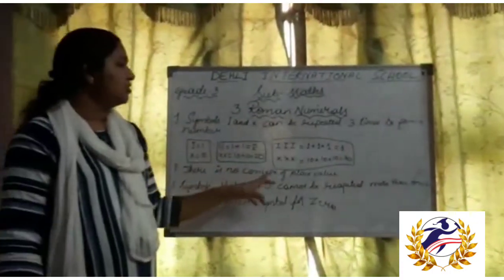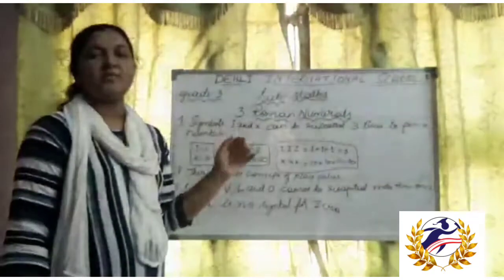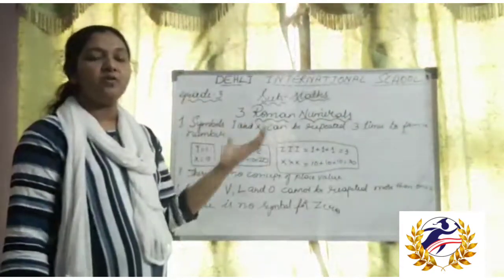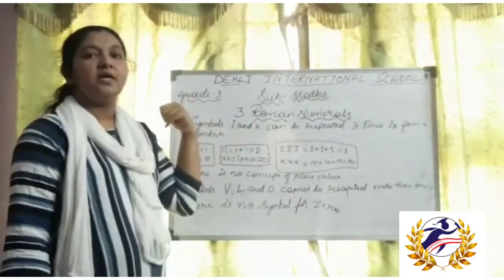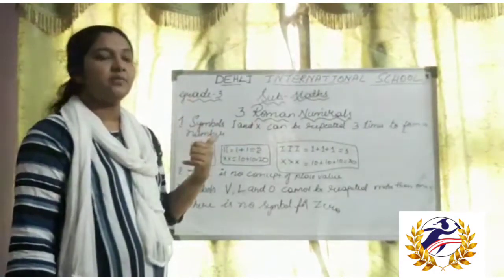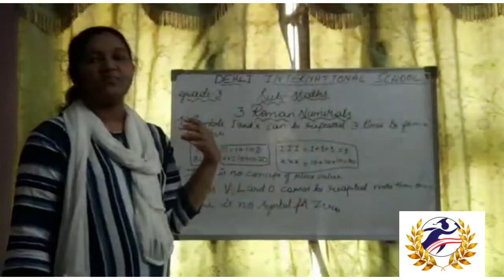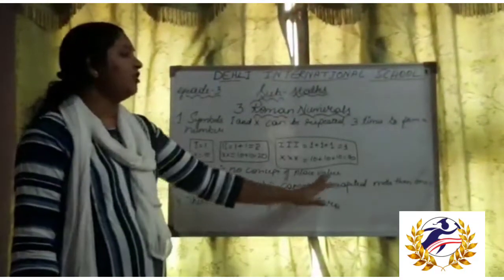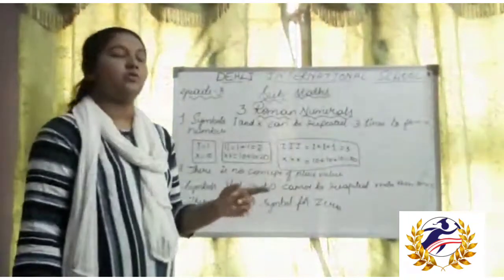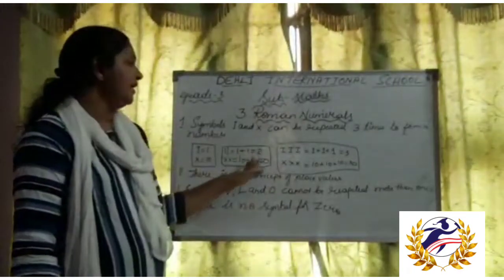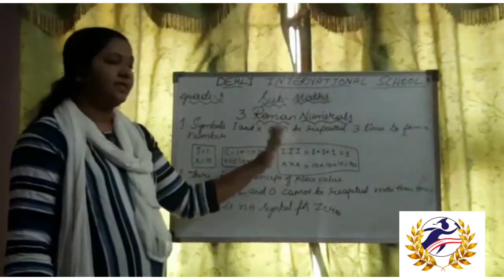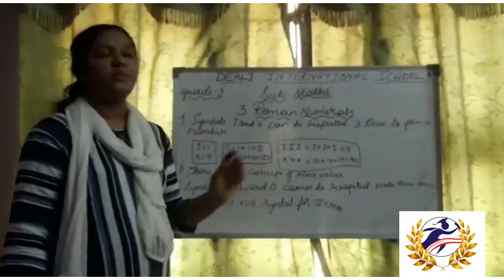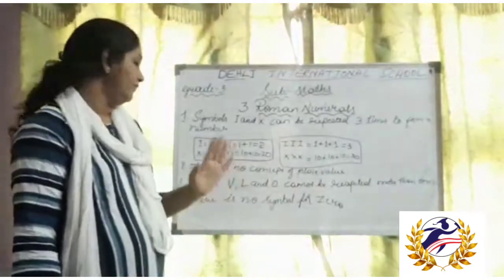The second rule: there is no concept of a place value system in the Roman numerals system. We have learnt the place value system in Hindu-Arabic and international numerals systems, but here there is no concept of place value. Also, symbols V, L, and D cannot be repeated more than once. We can repeat I and X thrice, but V, L, and D cannot be repeated more than once.